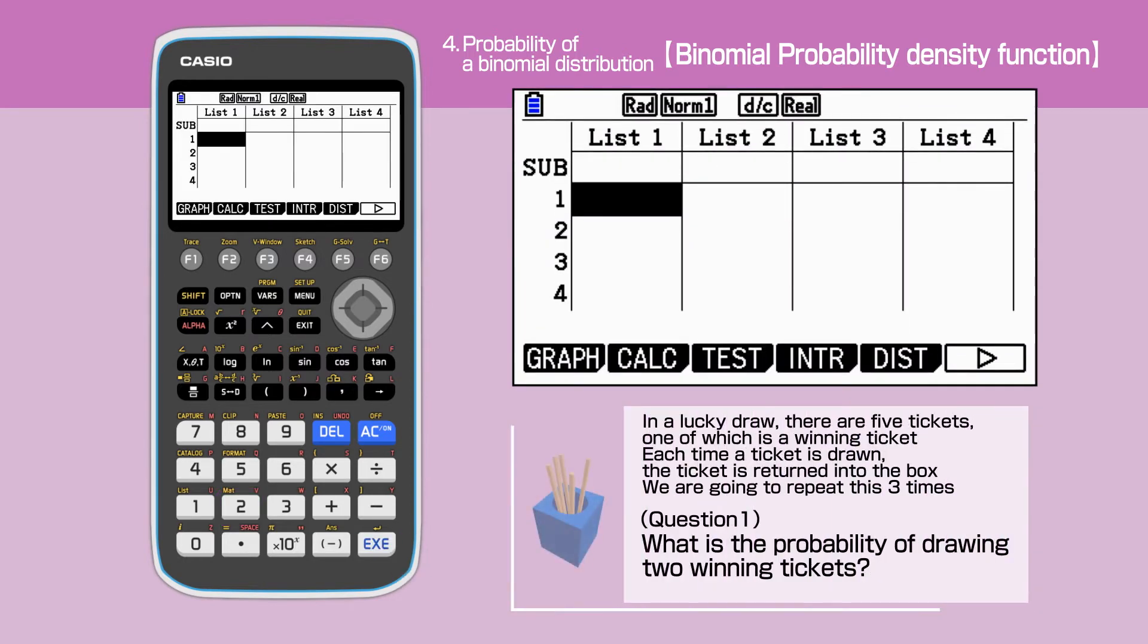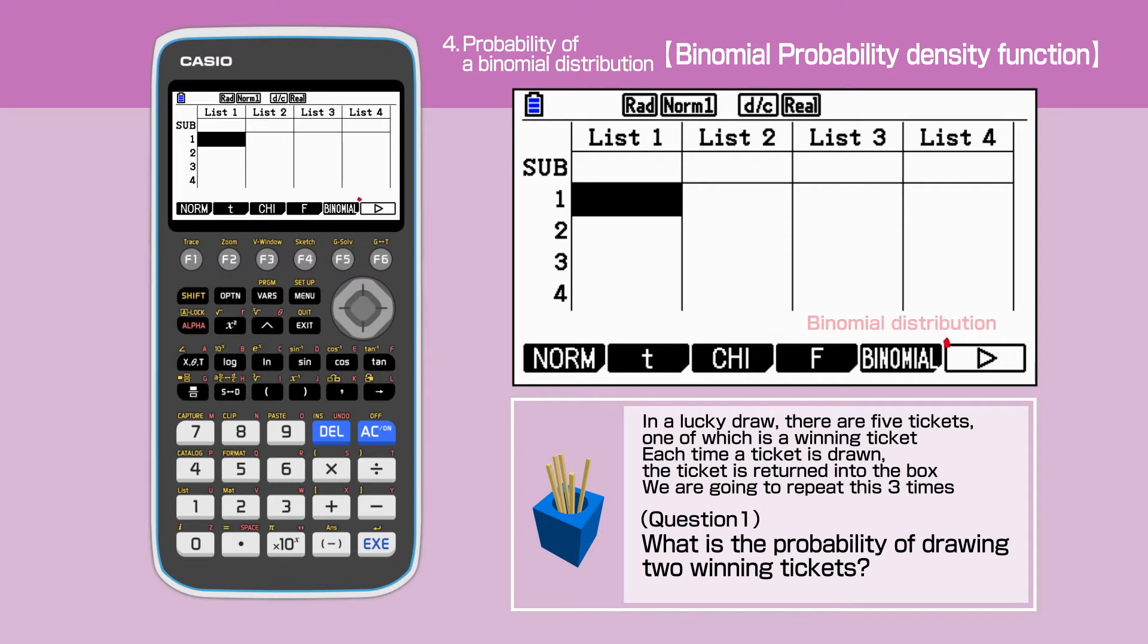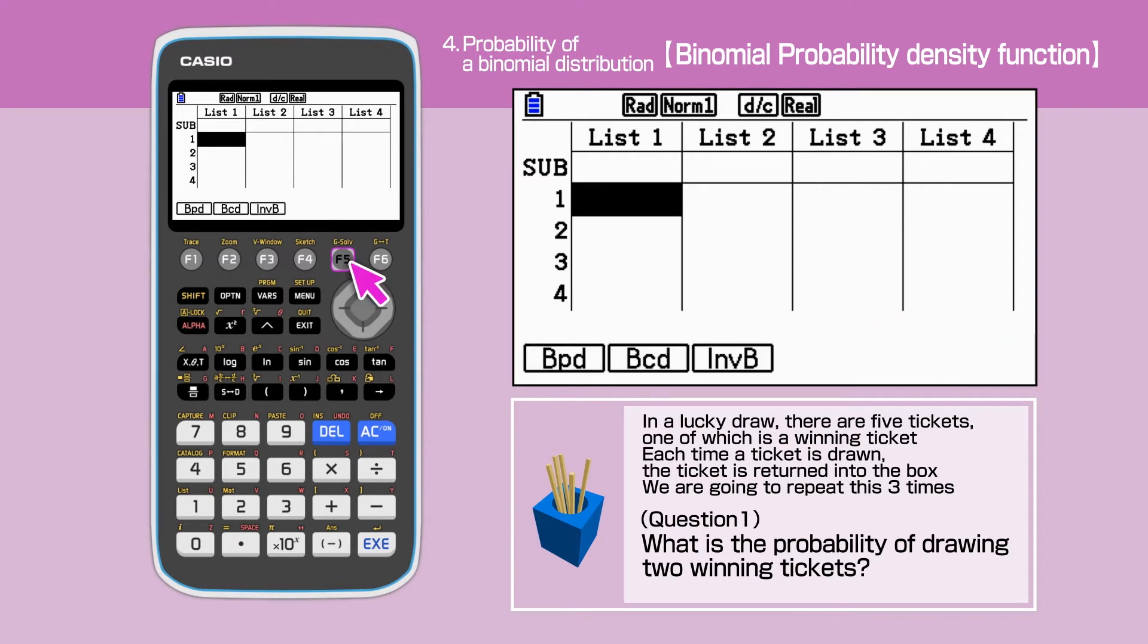Let's solve question 1. Press F5 to select distribution. Press F5 again to select binomial. Press F1 to select binomial probability density function.